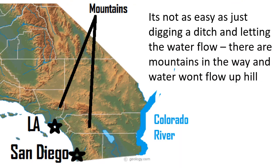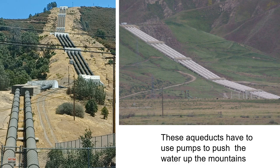Now, it's not as easy as just digging a ditch and letting the water flow downhill. There are mountains between the Colorado River and the Los Angeles/San Diego metropolitan area, so you can't just dig a ditch and have the water flow downhill — it won't. It's got to go up and over the mountains first. These aqueducts are big huge pipes that basically pump the water up and over the top of the mountain, and that requires a lot of infrastructure — building the pipes, maintaining them, and running a pump that takes electricity or fossil fuels to drive that water up and over the top.